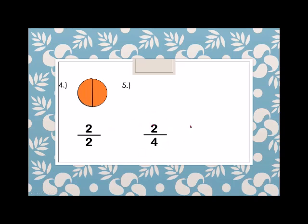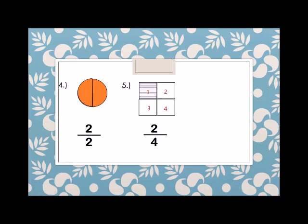Next: 2 fourths. We have a square divided into 4 parts and we have to shade 2 parts. So 1, 2, 3, and 4 — 4 parts. So we have to shade 1 and 2. This is 2 fourths.